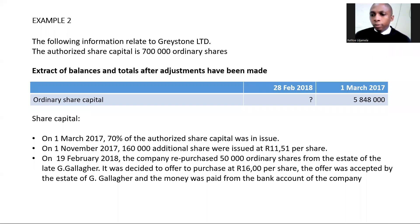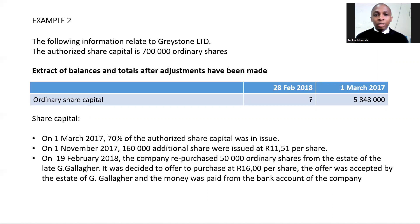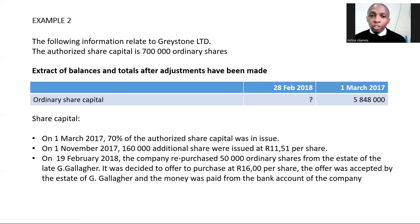Let's look at this example. It has part of issuing shares and part of buying back shares. The following information relates to Greystone Limited — the authorized share capital is 700,000 ordinary shares. We are given the extract from balances and totals after adjustments. The ordinary share capital balance given was on 1 March 2017, and we are not given how many shares were issued at the beginning of the year, so we'll have to read the additional information to figure that out.